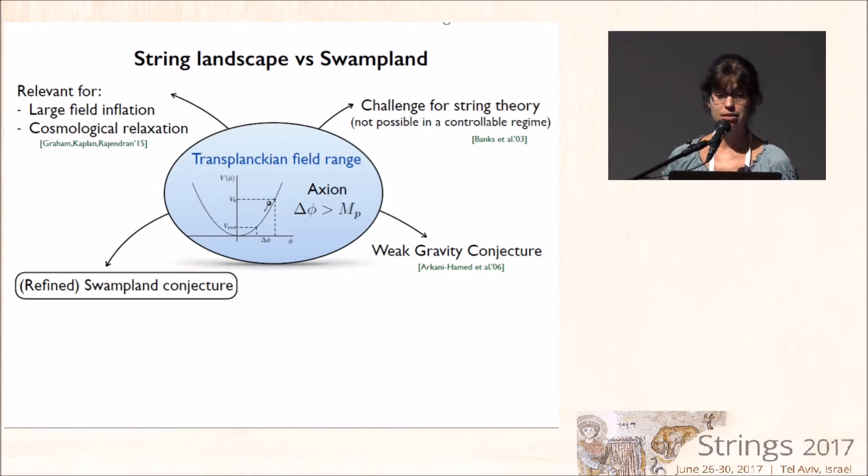And for instance, there has been a lot of interest on constructing theories of an axion having a transplanckian field variation. And this is because two reasons. First, because they are important for phenomenology, for large field inflation or cosmological relaxation of the electroweak scale. And second, because it's very hard to embed these models in string theory.